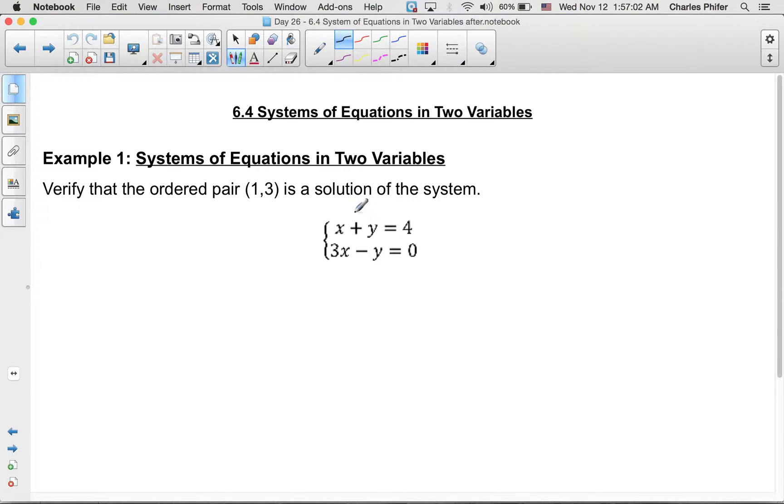What does it mean for this to be a solution of the system? How could we verify that when x is 1 and y is 3, it's a solution? Just plug it in. We plug in this x and y, and it should make both equations true. So 1 plus 3 equals 4, that's true. And then 3 times 1 minus 3 equals 0, that's true.